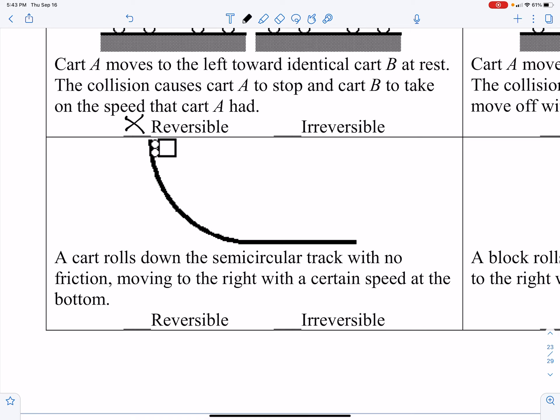A cart rolls down a semicircular track with no friction, moving to the right with a certain speed at the bottom. Again, no friction, that's the key. That would be a reversible process. Because if you move to the left with that same speed, you'd be able to get up the hill to a certain height.